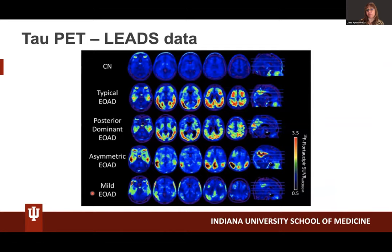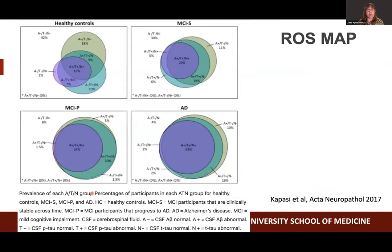So we have amyloid, we have tau, we have neurodegeneration — now what? The problem is that even within the Alzheimer's disease spectrum, individuals with amnestic or even non-amnestic presentations can present with any combination of A, T, and N determinants. This Venn diagram from ROSMAP shows that among MCI progressors and AD cases, the vast majority is A+T+N+, but there are others too. It's already getting complicated, and adding other pathologies to the mix makes it more so.